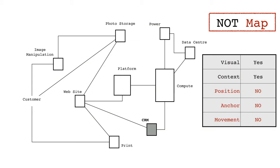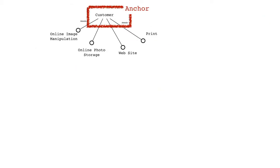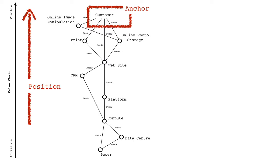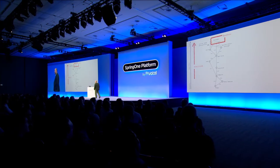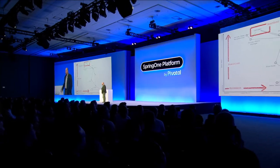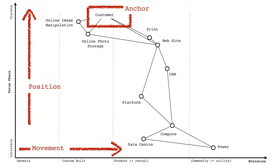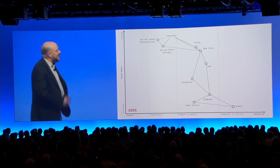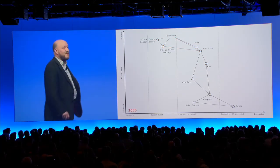So, how do you turn a not-map into a map? First, you give it an anchor: customer. Then you have to add position of pieces — I used a value chain. And then you have to have movement — I used evolution. So you start off with the genesis of new acts, custom-built examples, products, and commodity services. And that was the first map I produced in 2005.